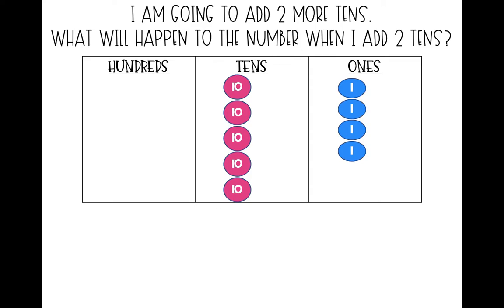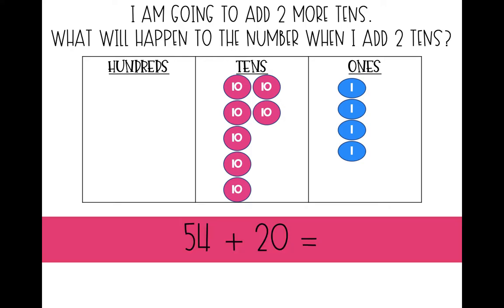I'm going to add two more tens. What do you think will happen to the number when I add two tens? My tens place is going to change. Let's see — one, two. We had 54 and we added two tens, which is 20. And what did we end up with? We ended up with 74. 54 plus 20 equals 74.